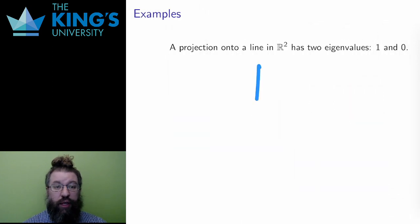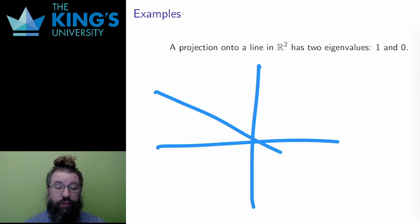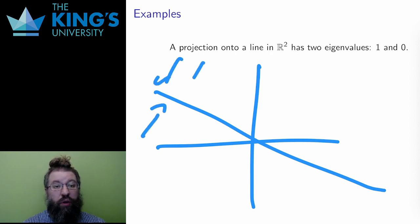A projection onto a line in R^2 also has two eigenvalues, 1 and 0. This is very like the reflection. Anything that's already on the line is unchanged,